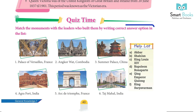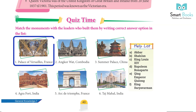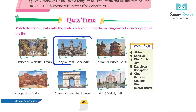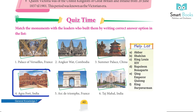Quiz Time: Match the monuments with the leaders who built them by writing the correct answer option in the list. 1. Palace of Versailles, France – King Louis. 2. Angkor Wat, Cambodia – King Suryavarman. 3. Summer Palace, China – Emperor Qianlong. 4. Agra Fort, India – Akbar.